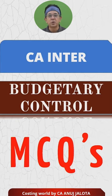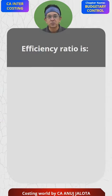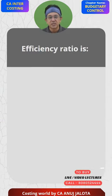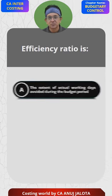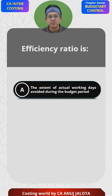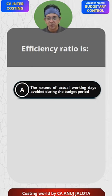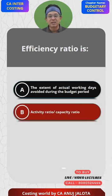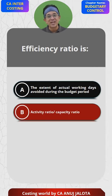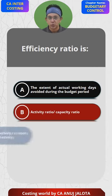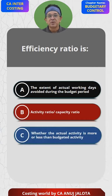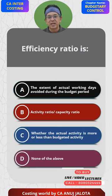Budgetary control MCQs. Efficiency ratio is: A) the extent of actual working days avoided during the budget period, B) activity ratio divided by capacity ratio, C) whether the actual activity is more or less than budgeted activity, or D) none of the above.